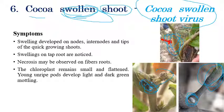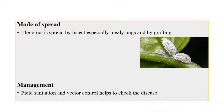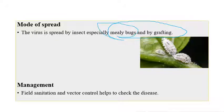Due to Cocoa Swollen Shoot infection, chloroplasts remain small and flattened, young fruits cannot develop, and yield is reduced. The virus is transmitted by mealybugs — the scientific name being Pseudococcus njalensis — and grafting is also a route of transmission. For management, field sanitation and control of the mealybug vector is recommended.